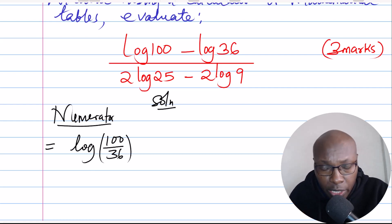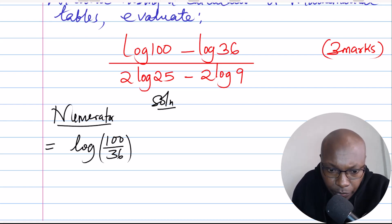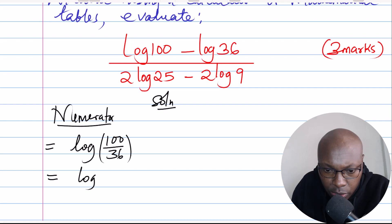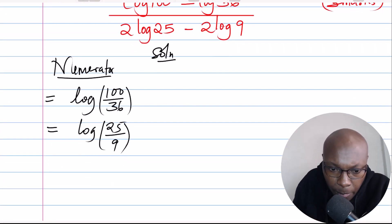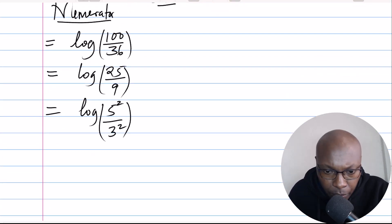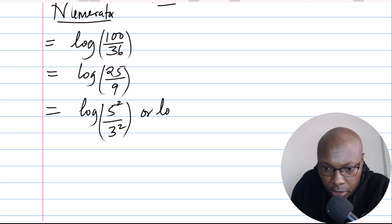When you write log of 100 minus log of 36 as a single log, you can simplify 100 divided by 36. Divide both numerator and denominator by 4, giving log of 25 over 9. Then notice that 25 can be written as 5 squared and 9 as 3 squared, so you have log of 5 over 3, all squared.